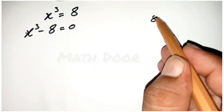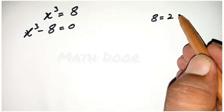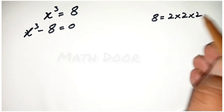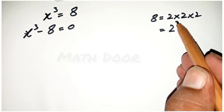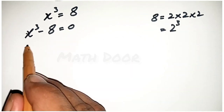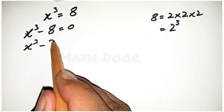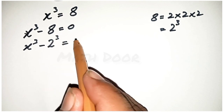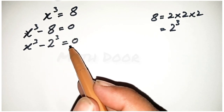Now, we can write 8 is equal to 2 multiply 2 multiply 2, which is equal to 2 power 3. So we can write this as x power 3 minus 2 power 3 is equal to 0.